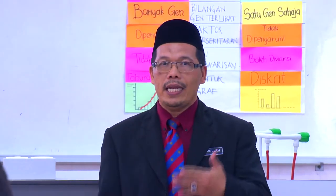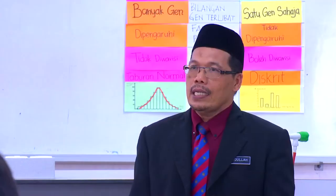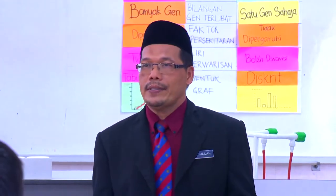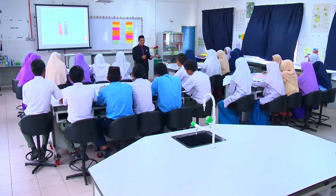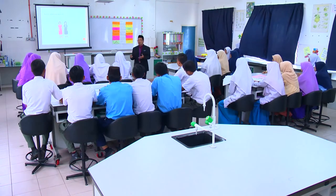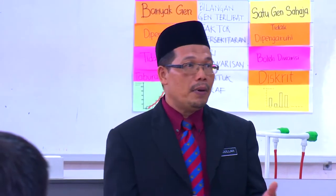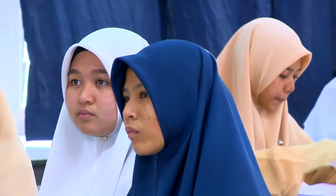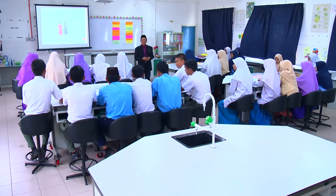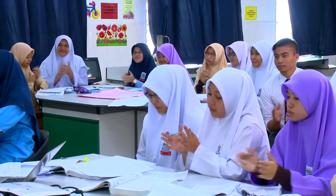Ada idea lain? Saya nak tanya lagi satu soalan berkait dengan jawapan Hamidzah tadi. Kenapa sifat fizikal, contohnya warna kulit, pasangan kembar ini berbeza — satu mungkin warna kulitnya agak gelap, satu lagi agak cerah? Bagaimana warna kulit ini mempengaruhi pasangan kembar itu? Yang berkulit gelap duduk di tempat bercuaca panas, contohnya negara di garisan khatulistiwa seperti Malaysia dan Brazil. Tahniah, betul, tepuk tangan. Alhamdulillah. Itu dari segi sifat fizikal.